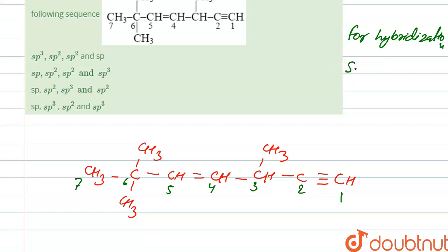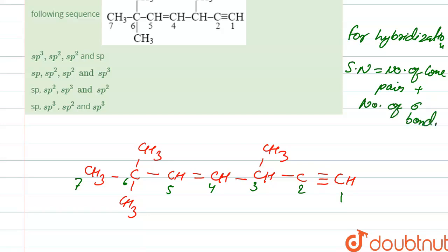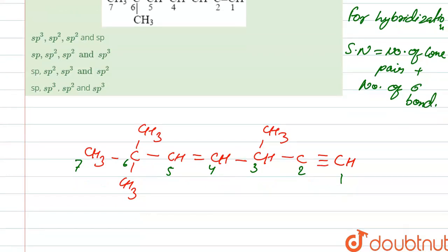For hybridization, we calculate the steric number. The steric number can be calculated by: number of lone pairs plus number of sigma bonds. Here there is no lone pair at any of the carbons. So steric number for C2: lone pair is zero, and let's see here at carbon two.